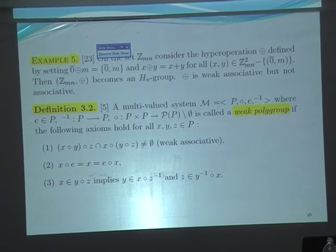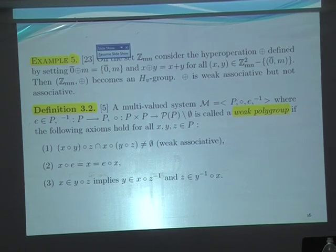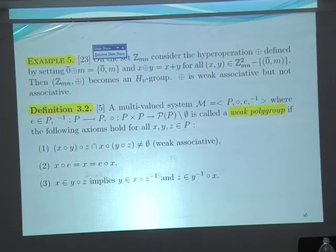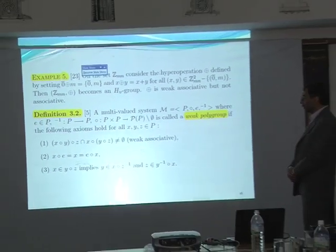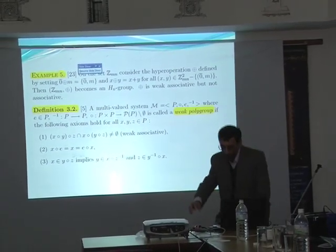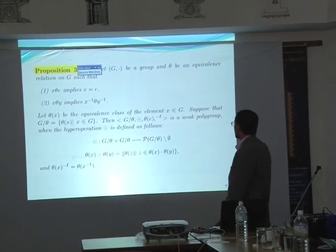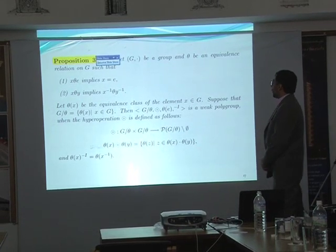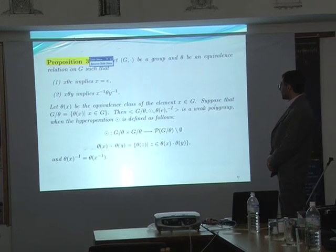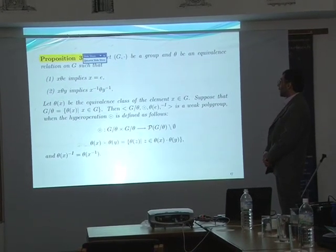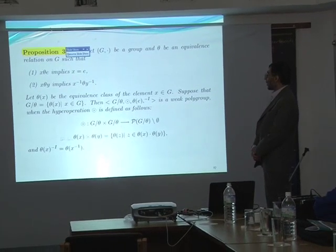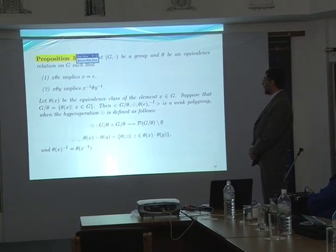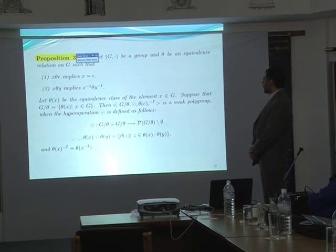We have axioms: one, weak associativity; two, identity; and three, an axiom saying that we have inverses, as in groups. Here you can see a motivating example for weak hypergroups — when we have an equivalence relation on the set G which satisfies two axioms, then the quotient gives us a weak polygroup.